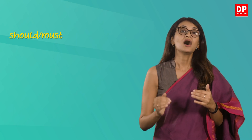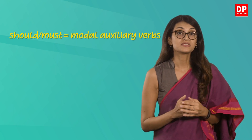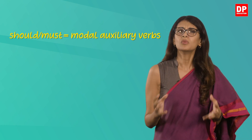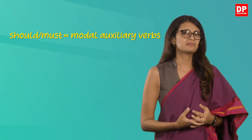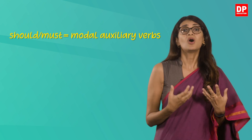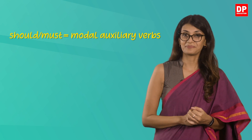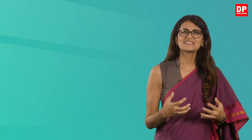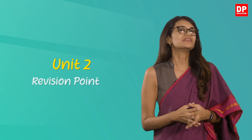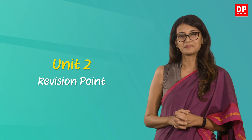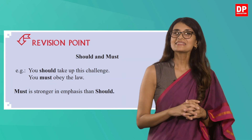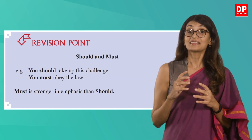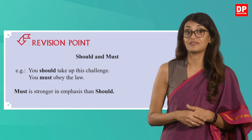The words should and must are modal auxiliary verbs, or simply modals. This means that they provide information about the function of the main verb that follows them. Let's look at the revision point in unit 2 of your pupils book. Turn to page 19 and let's look at the examples they have given.